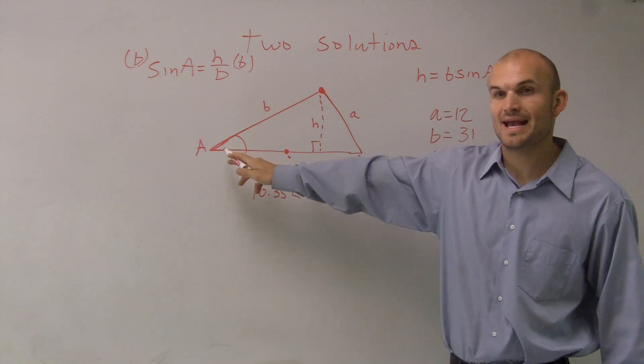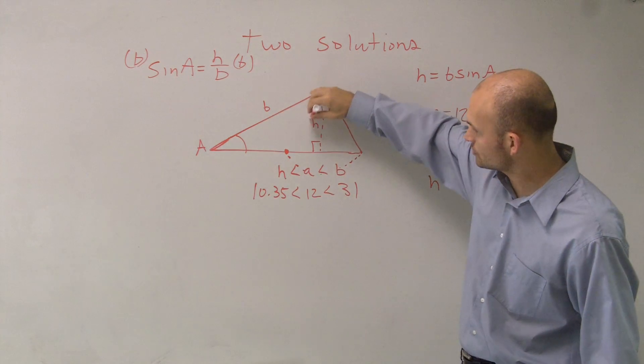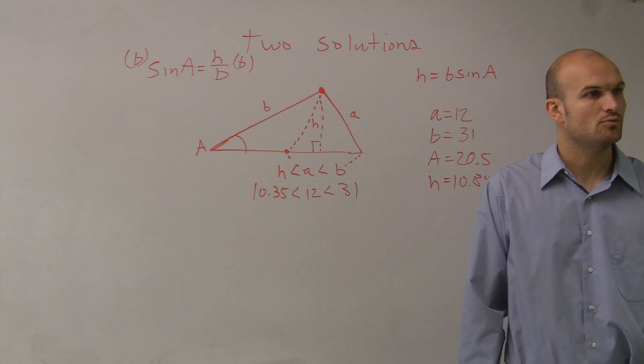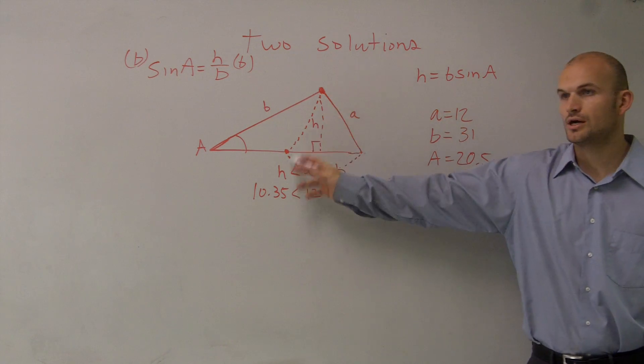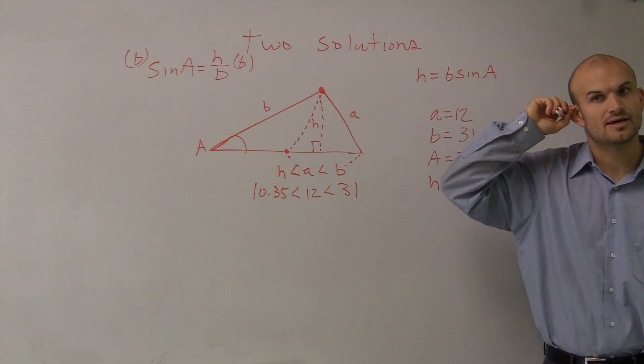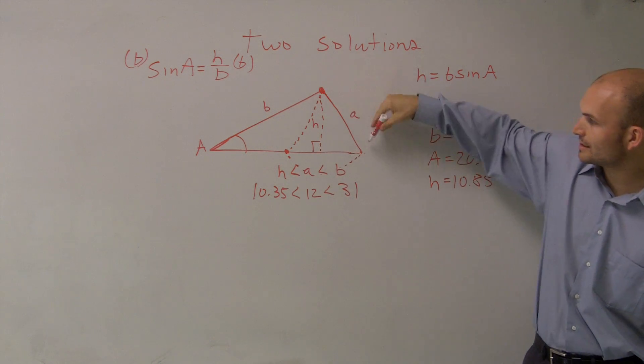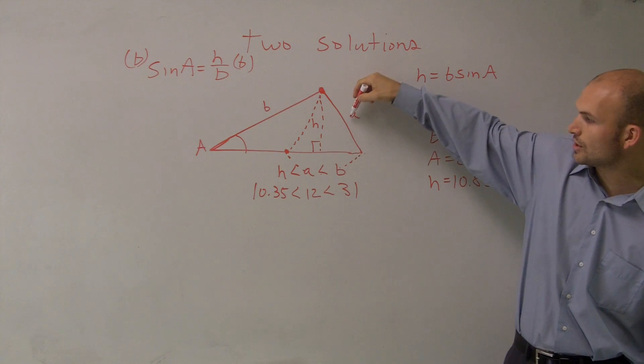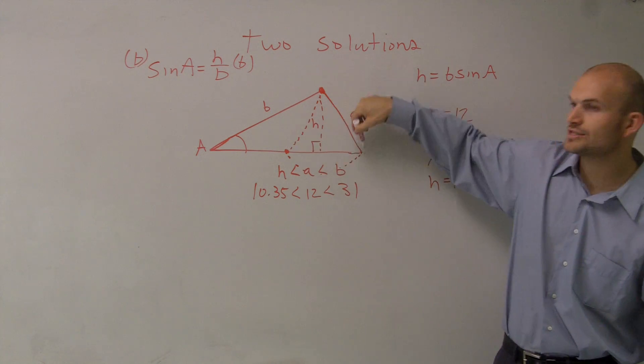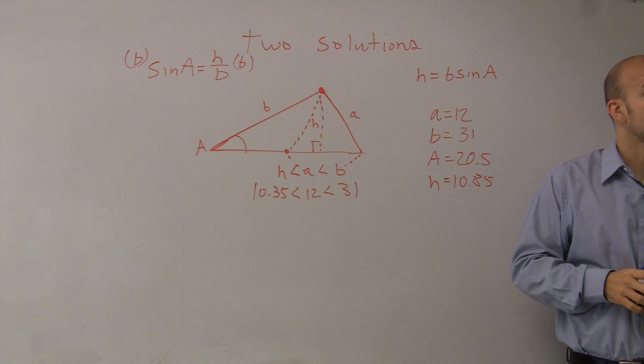this could rotate back. And as long as my angle A is the same, the height would still be the same. But you could also draw another triangle that would be more oblique like that, with this as an obtuse angle. So when you have that angle and B and A, you could write it like this. Or as long as your A is between the height and your B, you could write it as two different triangles. So that is the case when you have two solutions.